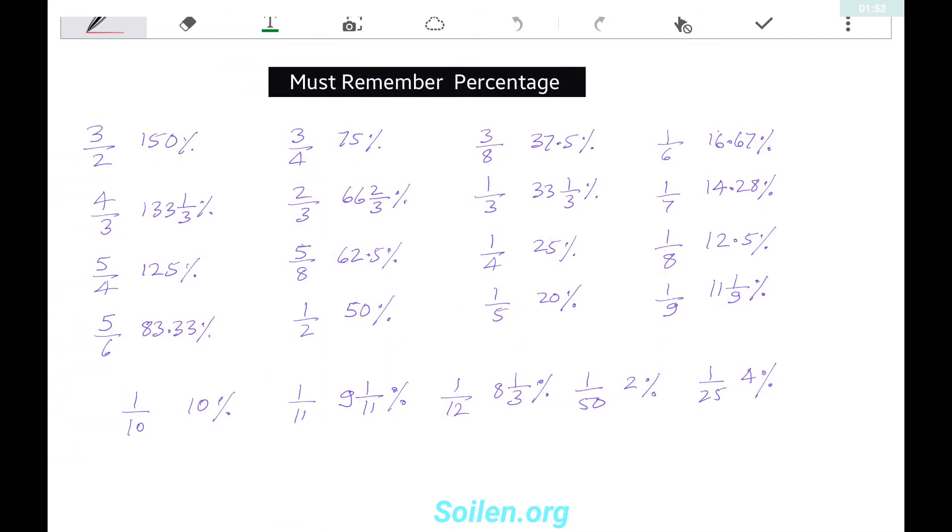These percentages are frequently used, so you must remember all these: 3/2 is 150%, 5/4 is 125%, 5/6 is 83.33%, 3/4 is 75%, 2/3 is 66 and 2/3 percent, 5/8 is 62.5%, 1/2 is 50%, 3/8 is 37.5%, 1/3 is 33 and 1/3 percent, 1/4 is 25%, 1/5 is 20%, 1/6 is 16.67%, 1/7 is 14.28%, 1/8 is 12.5%, 1/9 is 11 and 1/9 percent, 1/10 is 10%, 1/11 is 9 and 1/11 percent, 1/12 is 8 and 1/3 percent, 1/50 is 2%, 1/25 is 4%.